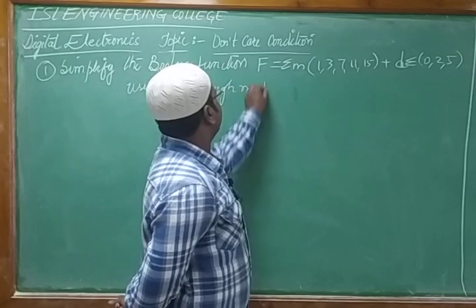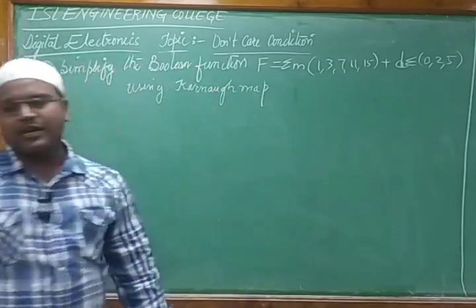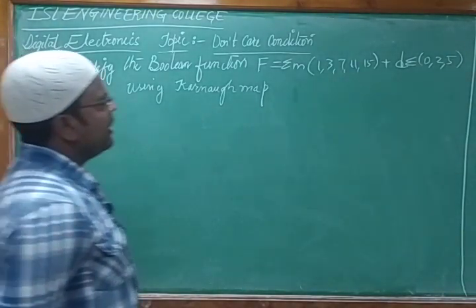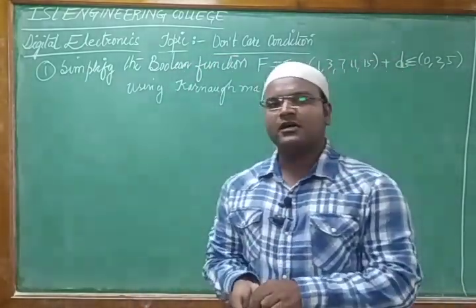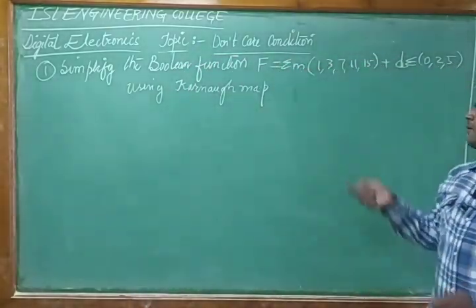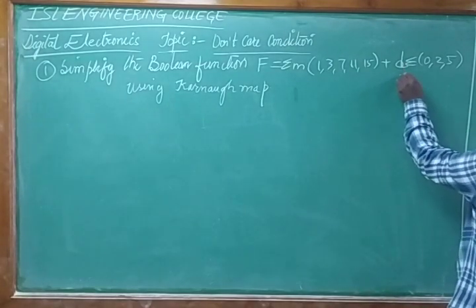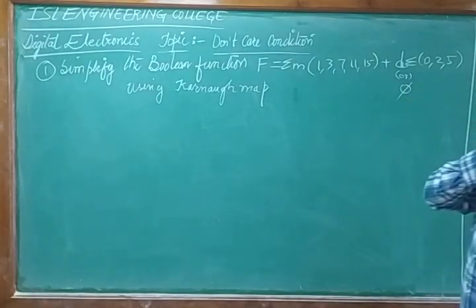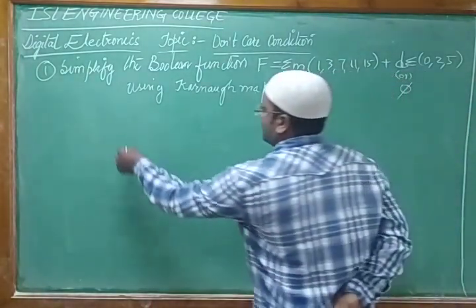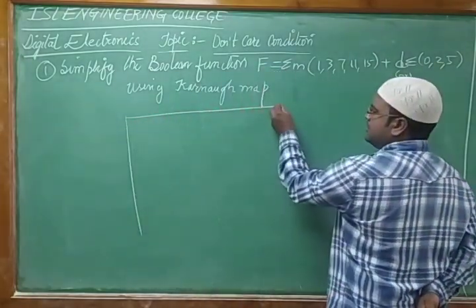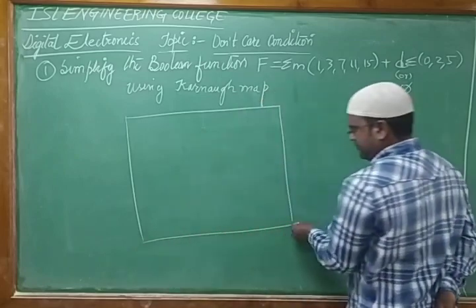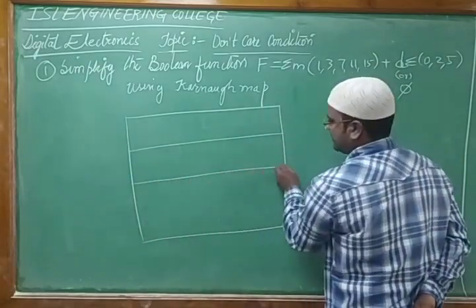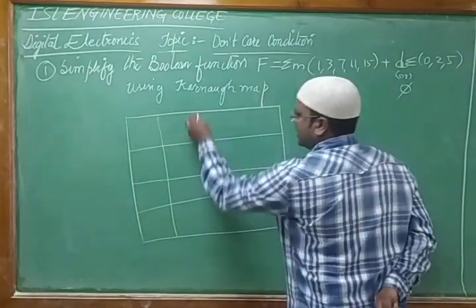They gave the function with minterms 1, 3, 7, 11, 15 and don't care bits 0, 2, 5, and asked us to perform the K-map simplification. Since bits are ranging from 0 to 15, we require a four-variable K-map. Each square box represents one minterm, so we are designing a four-variable K-map.